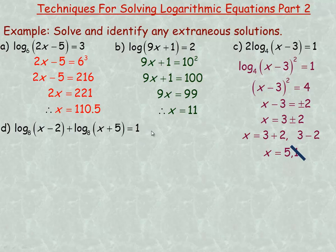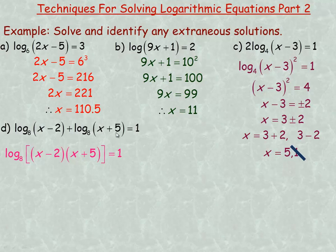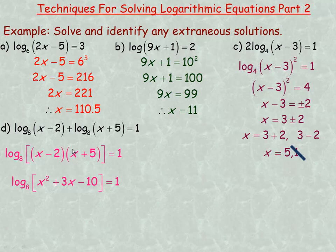On to example d. When you see the sum of two logarithms, you can rewrite that as one single logarithm by multiplying the arguments — this is called the product law. Be careful not to call it the product rule, because in calculus that's a specific differentiation rule. So we multiply x minus 2 and x plus 5: x times x is x squared, negative 2x and 5x add to 3x, and negative 2 times 5 is negative 10.